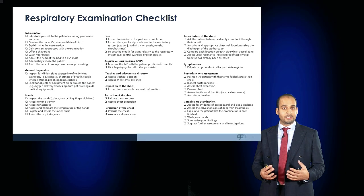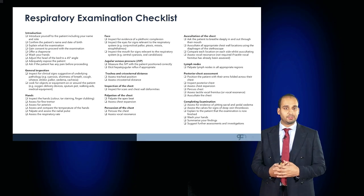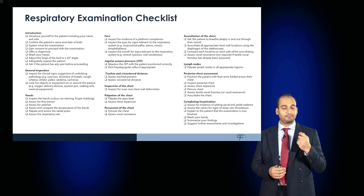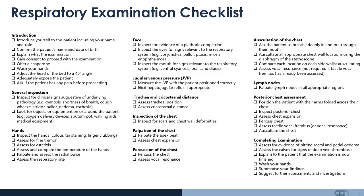In this masterclass we've covered how to effectively introduce yourself, the features to look for on general inspection both around the bed and about the patient, the features to examine in the hands, face, and neck including the JVP, the trachea and cricosternal distance, the features to look for on inspection, palpation, and percussion of the anterior and posterior chest, as well as the important groups of lymph nodes that must be examined and how to complete the examination. Thank you for attending this Medicine Masterclass.